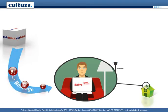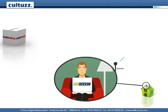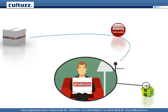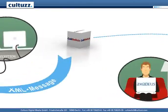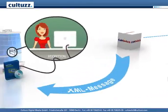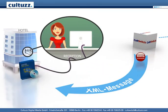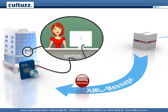Upon making a choice, the booking is sent directly to ColdSwitch, and immediately all other distribution channels are updated. ColdSwitch's state-of-the-art XML two-way interfaces close the circle. The booking is automatically registered in your system, saving time, preventing overbooking, and ensuring rate parity without moving a finger.